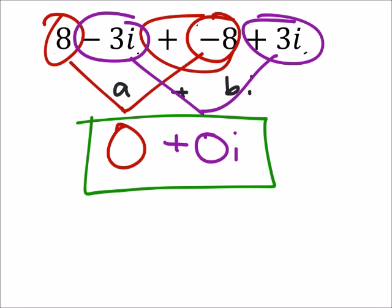We keep the i there just so that it takes on that form a plus bi. So unfortunately, even though the answer is just 0 on this, you would want to write 0 plus 0i.